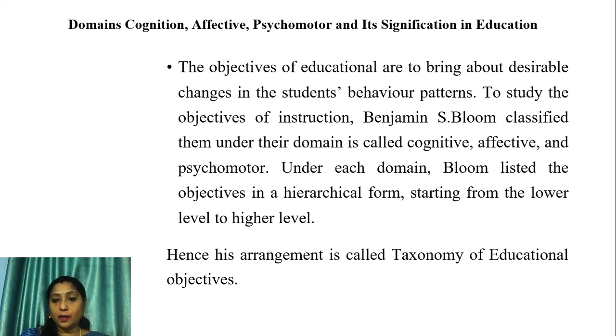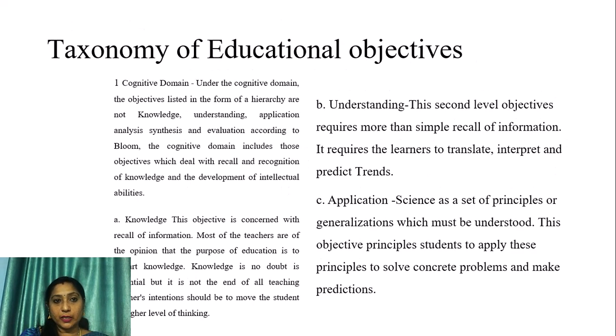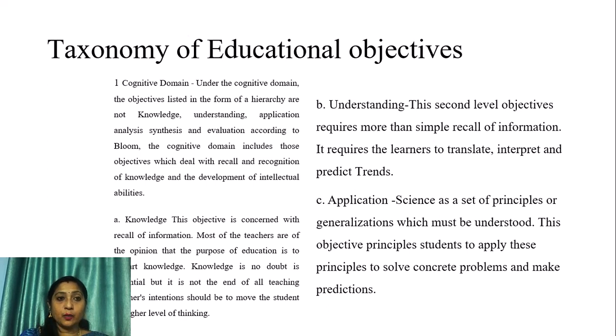Under each domain, Bloom ranked the objectives in a hierarchical form, starting from the lower level to the higher level. Hence this arrangement is called the Taxonomy of Educational Objectives.